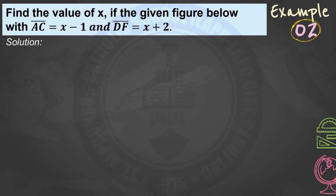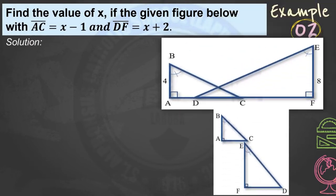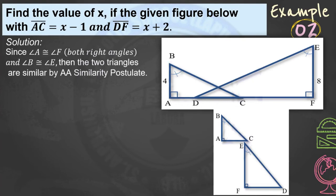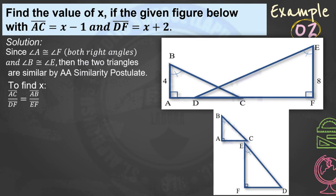Find the value of X given that segment AC equals X minus 1 and segment DF equals X plus 2. Since angle A and angle F are both right angles and angle B is congruent to angle E, the two triangles are similar by AA similarity postulate. For the corresponding sides, segment AC over segment DF equals segment AB over segment EF, giving us (X − 1) over (X + 2) equals 4 over 8.